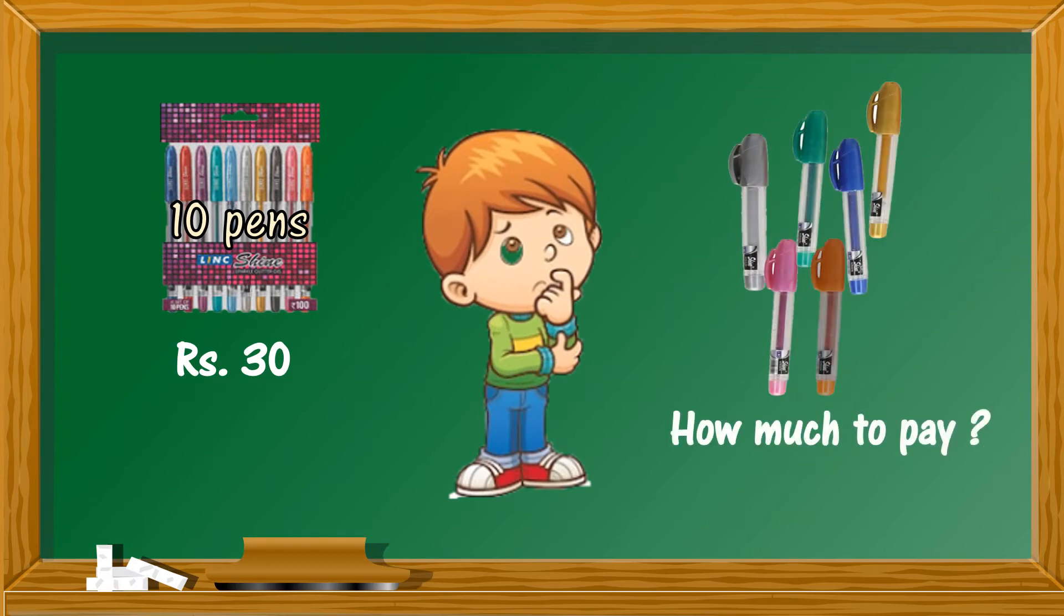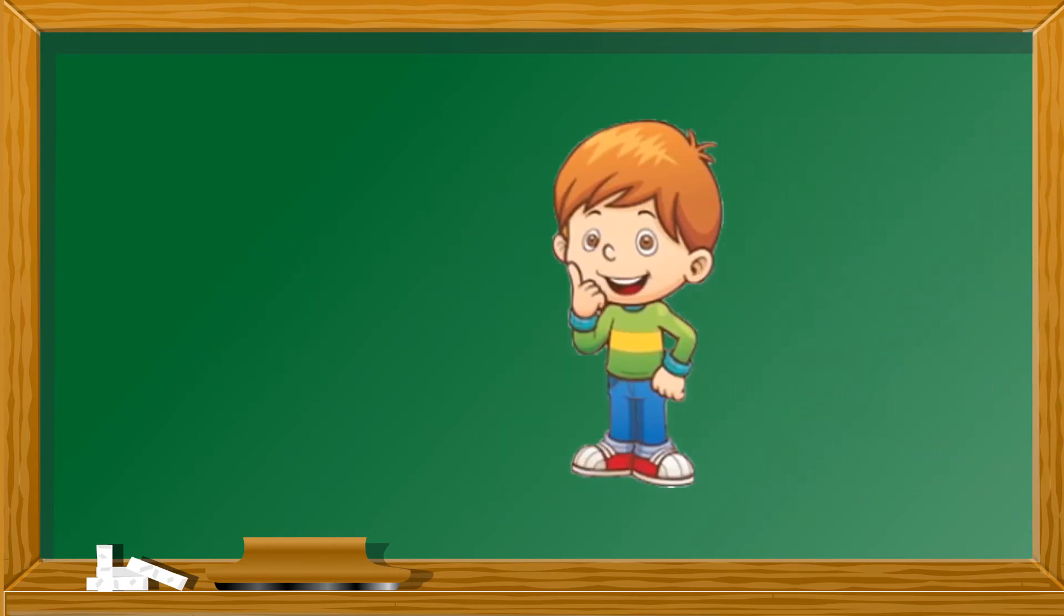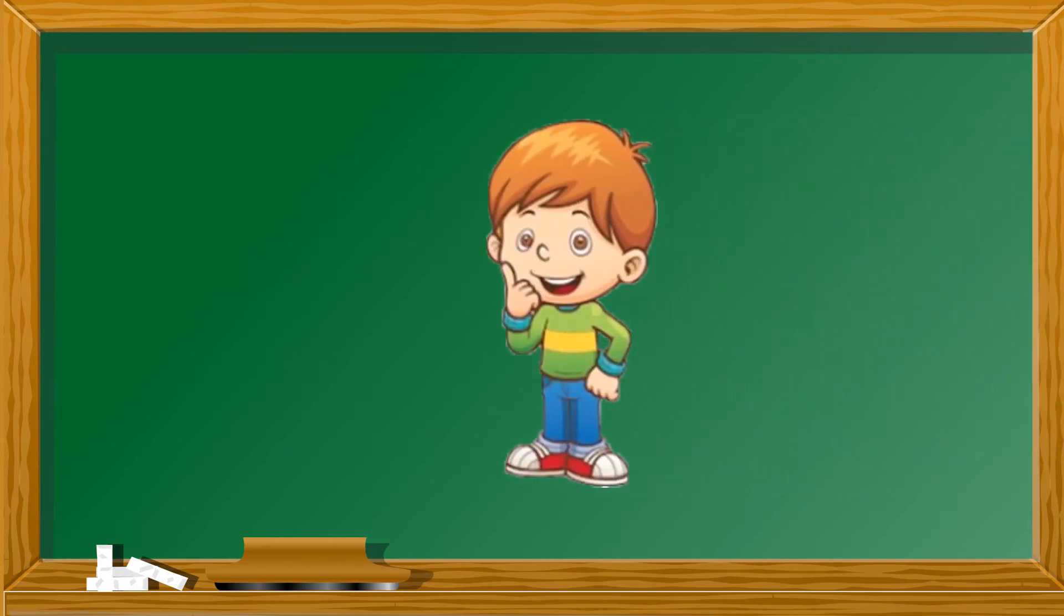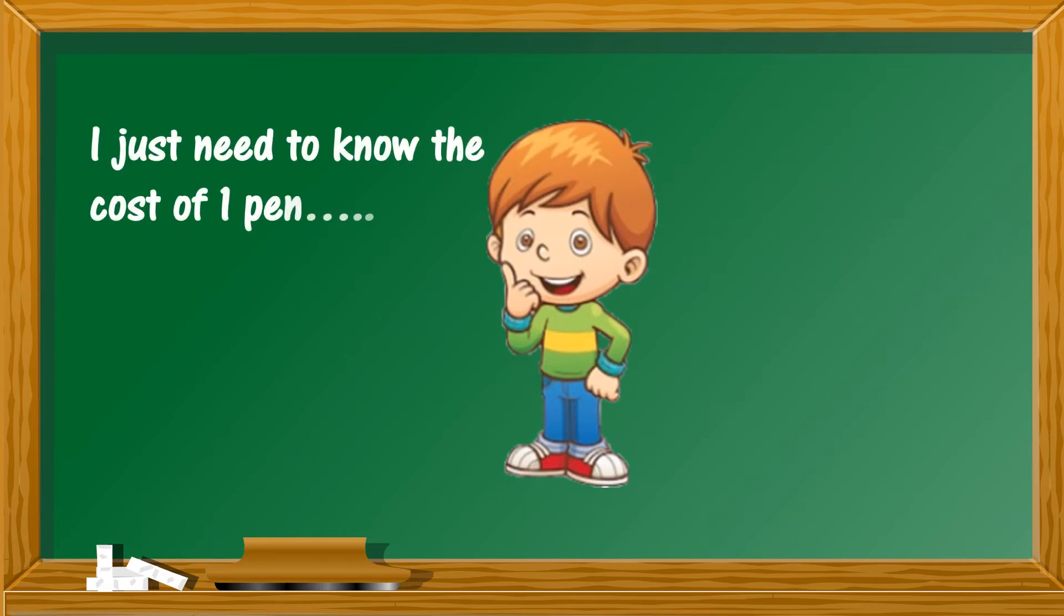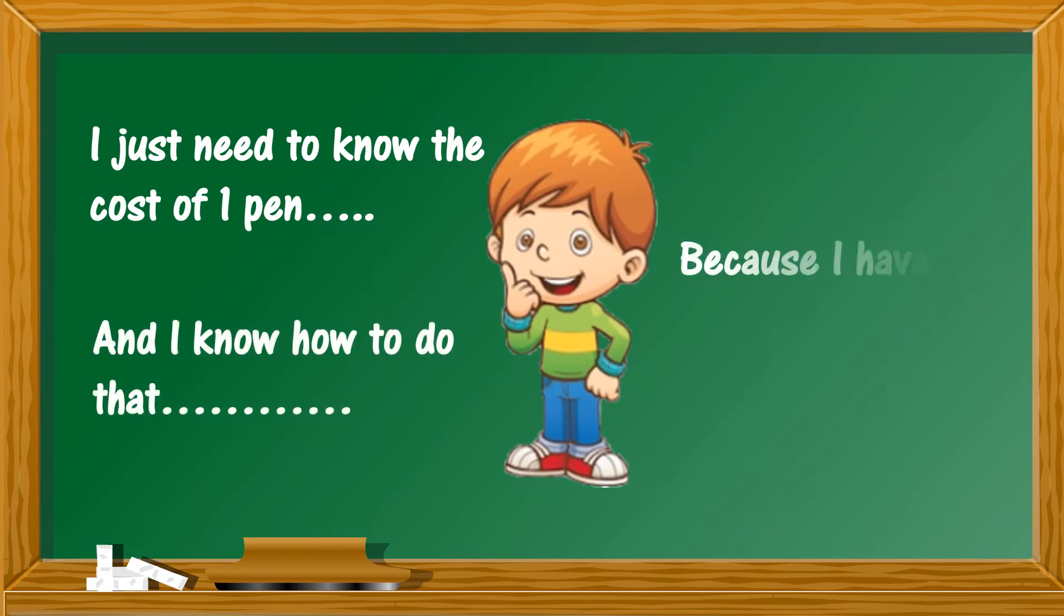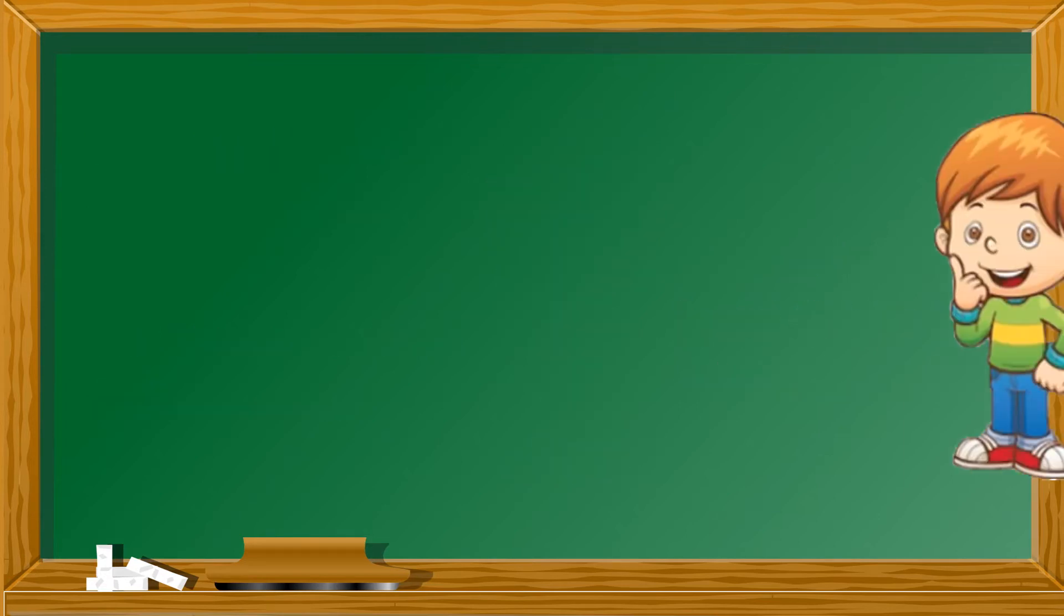And suddenly Ravi realized that it is not difficult after all. He just needs to know the cost of one pen, and he knows how to do that. Why? Because he has learned division in school.